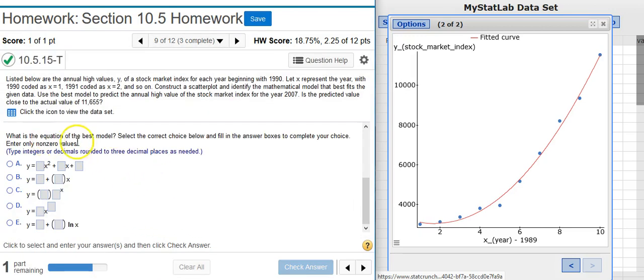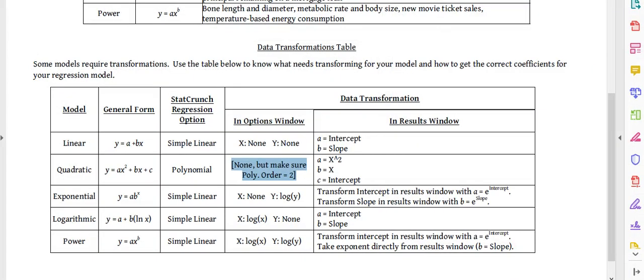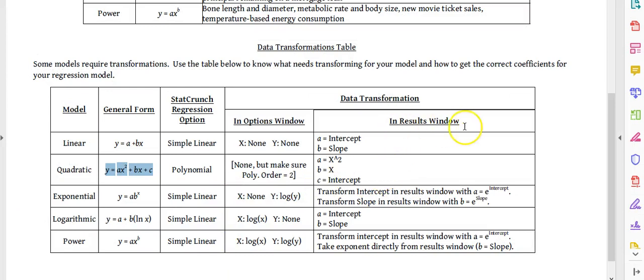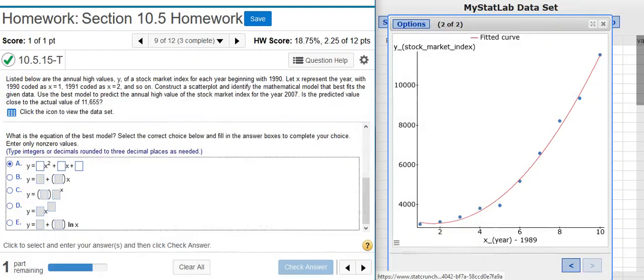Now, the next part asks for the equation for the best model. We know it's the quadratic equation. But if you come back here and look, see the general form here. So now I want to pick the answer option in StatCrunch that matches this general form, A x squared plus B x plus C. So if I look through my answer options, that's going to be answer option A. That matches the general form. To get the numbers that I put in my answer fields here for my coefficients, I go back to my table, and it says in the results window, A equals x squared, B equals x, C equals intercept. So this A, B, C matches what you see over here in the general form.